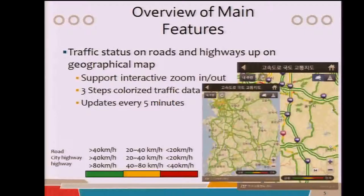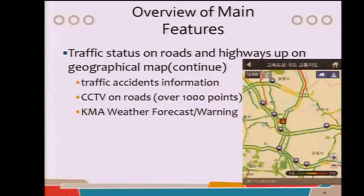Briefly, the main features of the Mobile Traffic Map Service are as follows. It supports interactive zoom in and out, and three-step colorized traffic data. The green color means free traffic and red means congested. The reference speed is applied by road types — it varies. In addition, it supports traffic accident information and CCTVs on the roads.